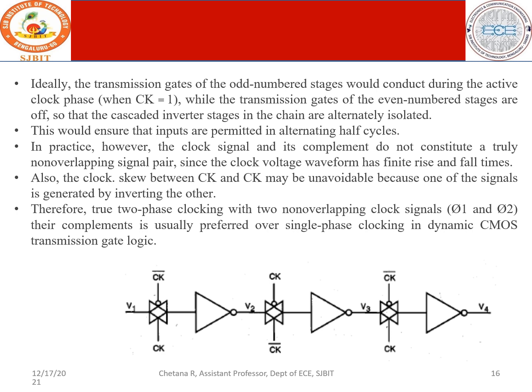Transmission gates of the odd-numbered stages conduct during the active clock phase, while the transmission gates of the even-numbered stages are off, and vice versa. In practice, however, the clock signal and its complement do not constitute a truly non-overlapping signal pair, since the clock voltage waveform has finite rise and fall times. Therefore, true two-phase clocking with two non-overlapping clock signals phi-1 and phi-2 and their complements is usually preferred over single-phase clocking in dynamic CMOS logic.